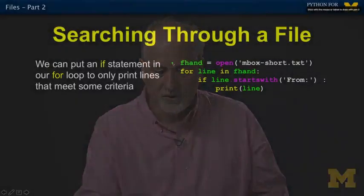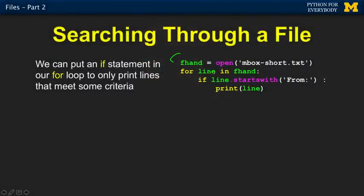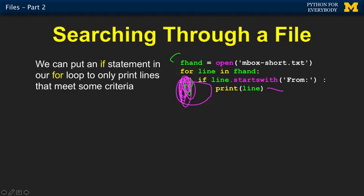We can search through things and show lines that meet a search criteria. We open the mailbox, loop through line by line, and then ask if the line starts with 'From: ' — if so, print it. This reads lines, and once in a while runs this conditional, so it's like a search operation through the file, printing only the matching lines.